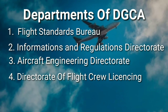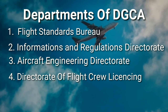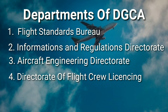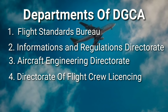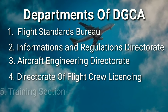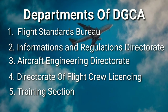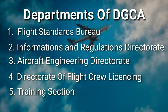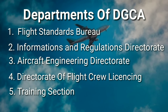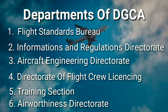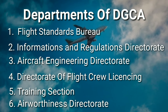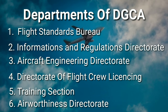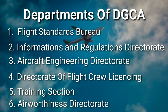Number four is the Directorate of Flight Crew Licensing, for the issue of pilot and other air personnel licenses. Number five is the Training Section, for providing proper training to emergency services, airworthiness, and air transport departments. Number six is the Airworthiness Directorate, which completely deals with the airworthiness of aircraft and issues the Certificate of Airworthiness, that is CofA, and renews certificates.